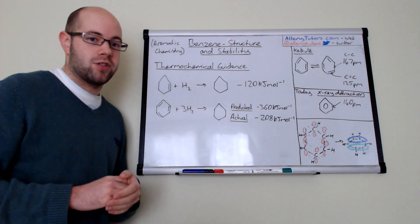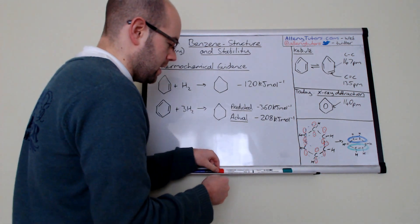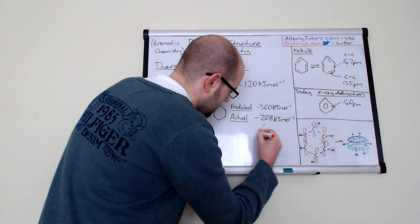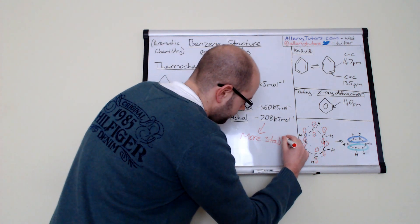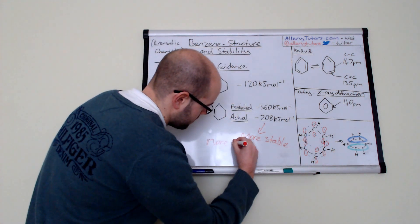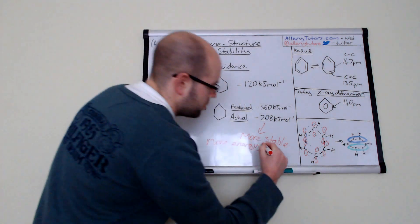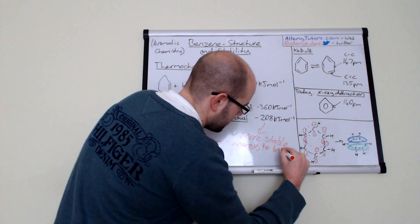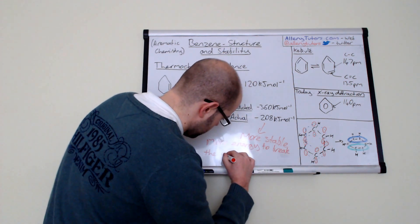That actually suggests that benzene is a little bit more stable than we expect and is a strong case for the delocalization system which is over here. I'm just going to put that on there as well. This suggests that it's actually more stable and that's because it takes more energy to break the delocalized pi system.